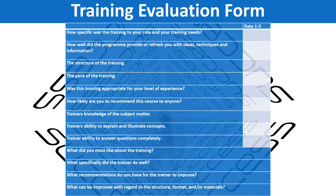Let's look at a training evaluation form. This is an example of a training eval form. We've got the course title, the date that the student attended, who was the trainer, and the delegate's name. They don't have to necessarily fill in their name — they can do this anonymously as well.